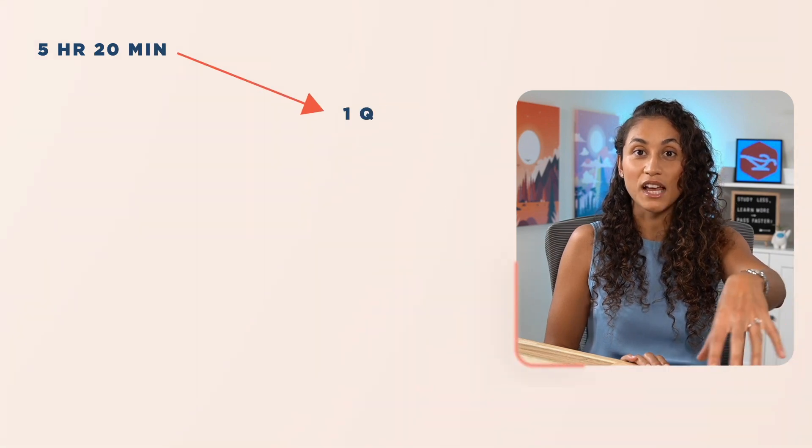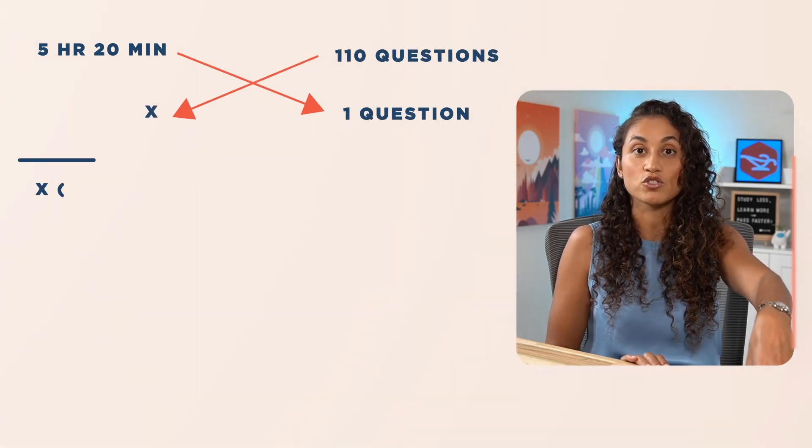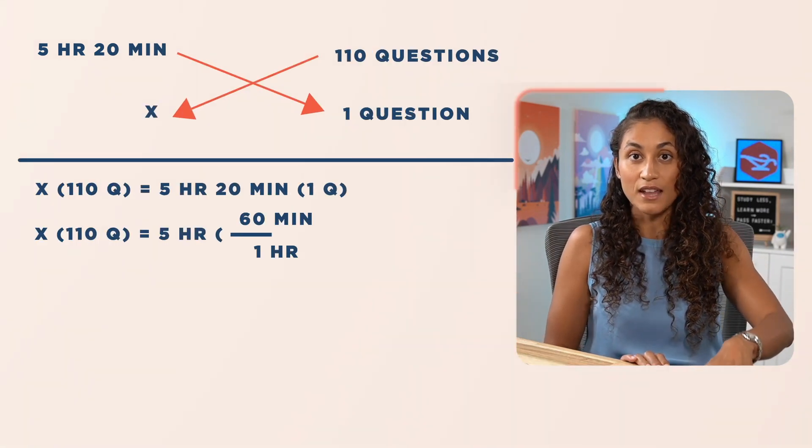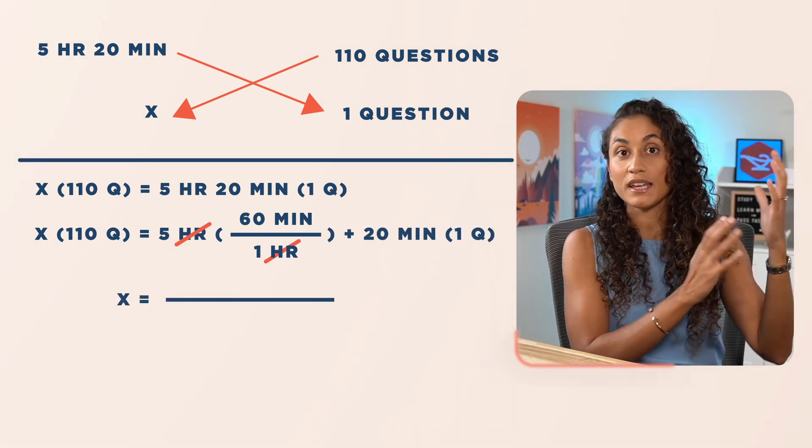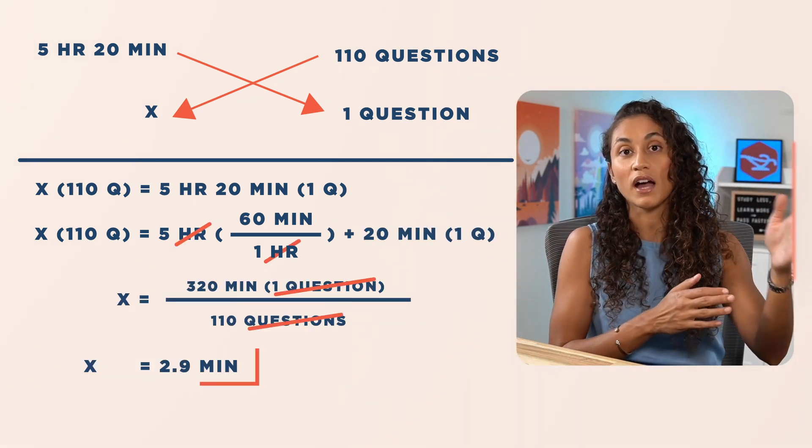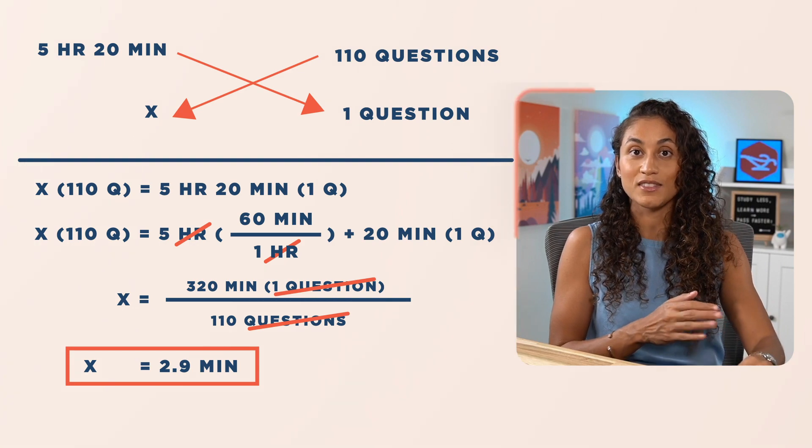The FE exam is a total of 5 hours and 20 minutes and you have to answer 110 questions. If we break that down, you get about 2.9 minutes per question. I don't recommend spending 2.9 minutes on each problem because every problem is different. Some problems are easier and might require just 30 seconds, while others are more difficult or require more steps and you might need more than three minutes.